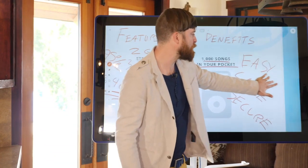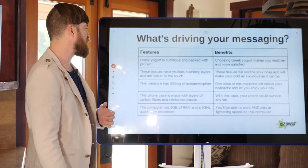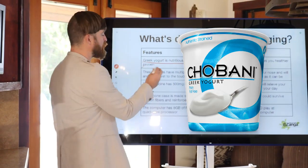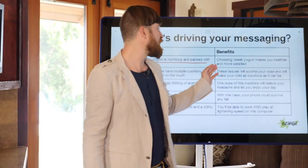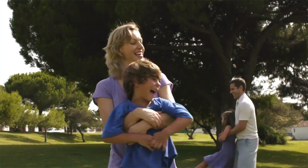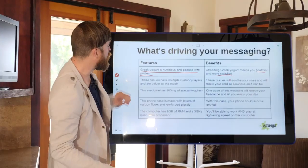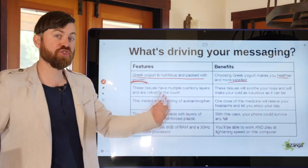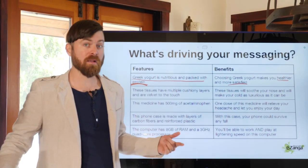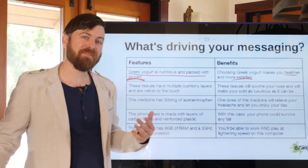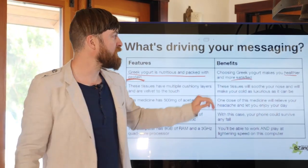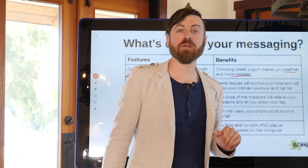Here are a few more examples of features versus benefits. A feature would be: Greek yogurt is nutritious and packed with protein. A benefit would say: choosing Greek yogurt makes you healthier and more satisfied. The old-school marketing thought was that if you say it has a lot of protein, people would jump to the conclusion themselves. Whereas benefits spell it out for the customer — they make it easier to understand what they're getting. Benefits say: you're getting healthier, you feel more satisfied.